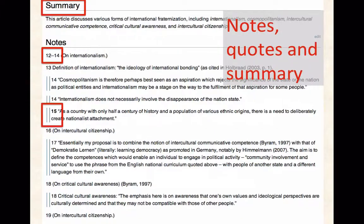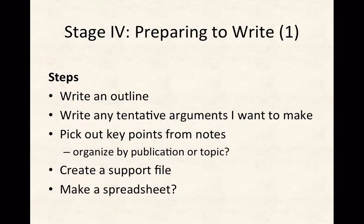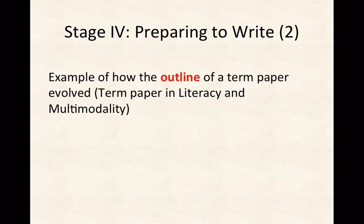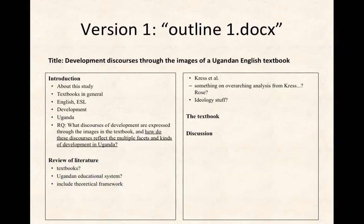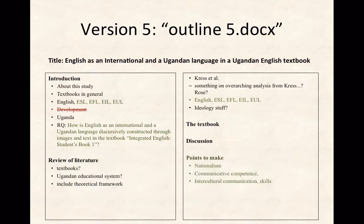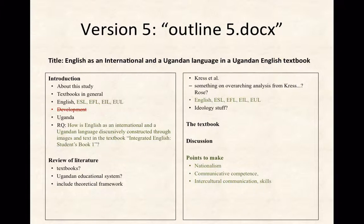Moving to the writing phase — or preparing to write, since the boundary can be blurry — I write an outline and include some arguments if I already have a sense of where I'm going. I use a support file, sometimes a spreadsheet. This is a sample of an outline that evolved for a paper I wrote last term. I started with just a couple of points, with no clue about literature review or what I wanted to discuss.